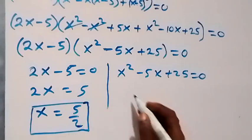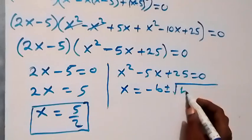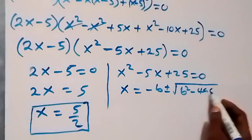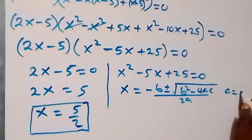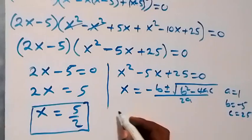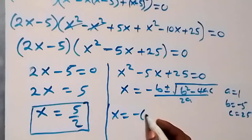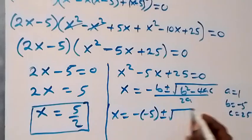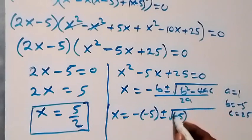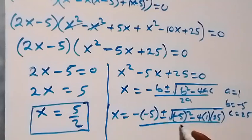We use the quadratic formula: x equals minus b, plus or minus square root of b squared minus 4ac, all over 2a. Here, a equals 1, b equals minus 5, and c equals 25. So substituting: x equals minus (minus 5), plus or minus square root of (minus 5) squared minus 4 times 1 times 25, all over 2 times 1.